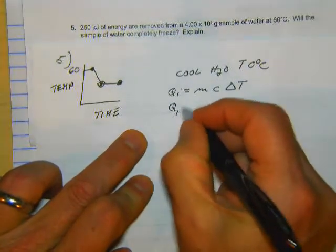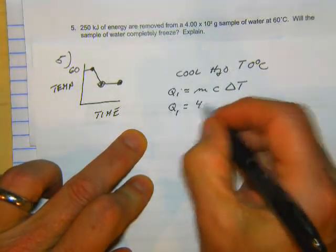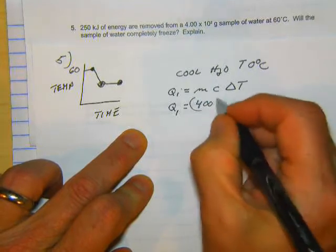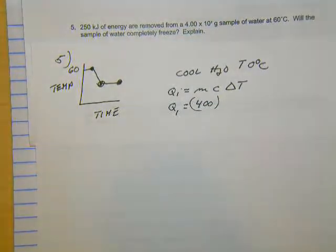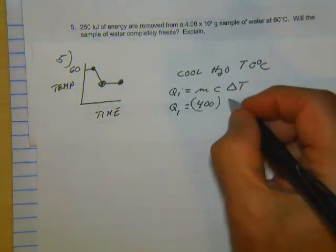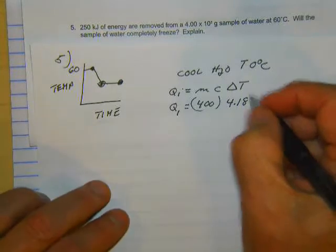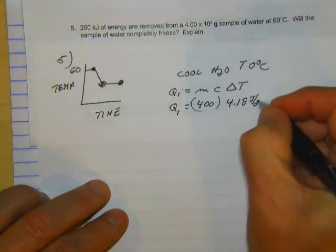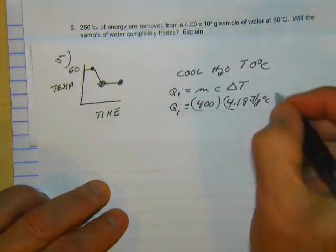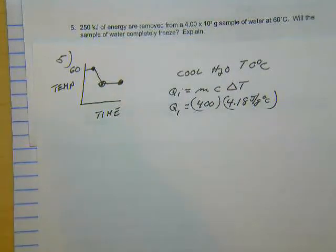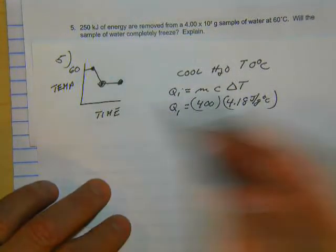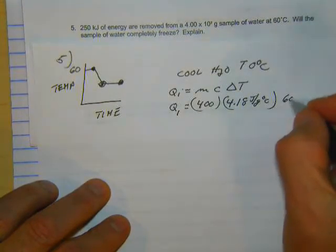So Q1, we have 400. And again, the heat capacity of liquid water is 4.18 joules per gram degrees Celsius. And we're going from 60 down to zero. So 60 degrees Celsius.